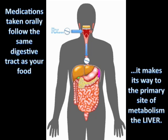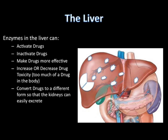Medications taken orally follow the same digestive tract as your food. They make their way to the primary site of metabolism, which is the liver. Enzymes in the liver can activate drugs, inactivate drugs, make drugs more effective, increase or decrease drug toxicity — which is too much of a drug in the body — or convert drugs to a different form.